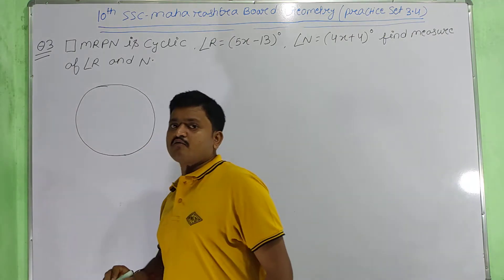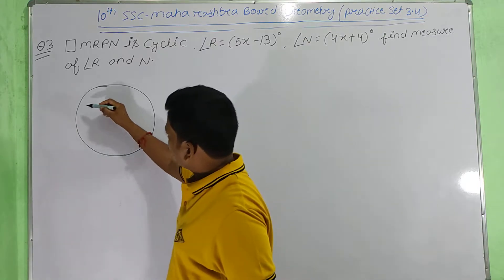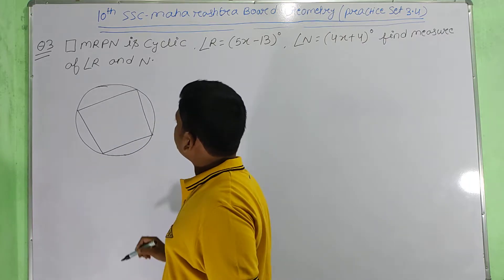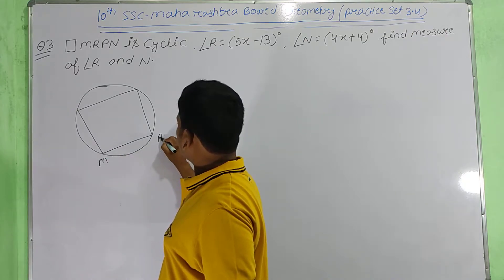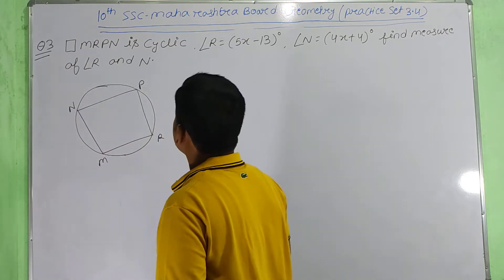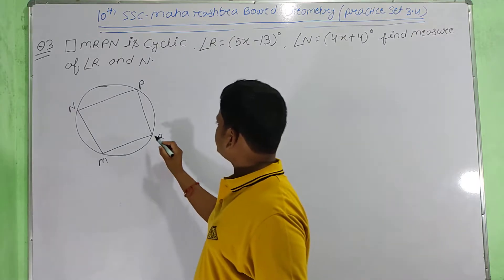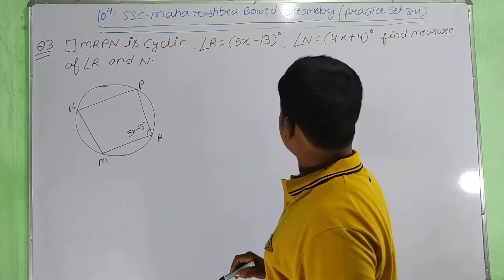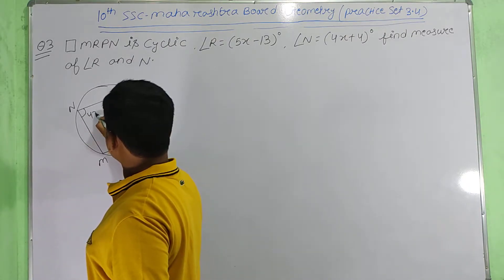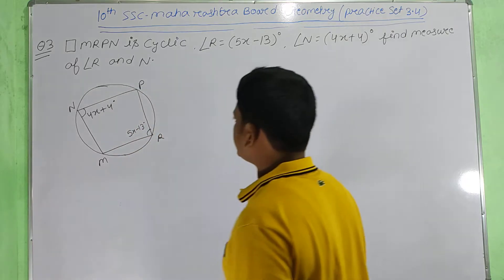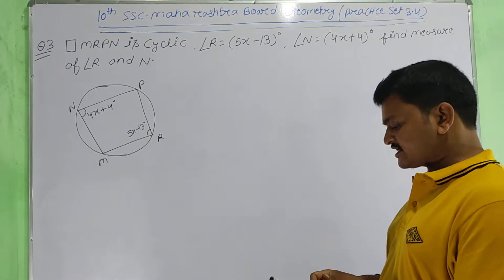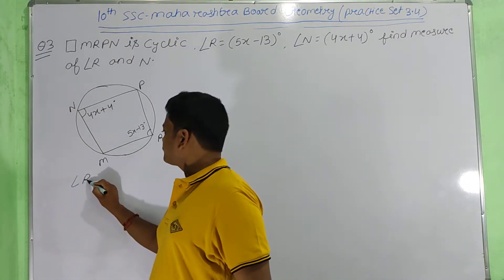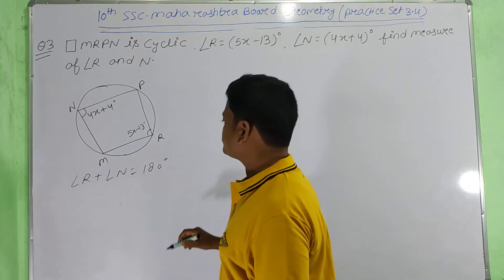A cyclic quadrilateral is a quadrilateral having all vertices on the circle. Here we have a cyclic quadrilateral MRPN where angle R is 5x minus 13 degrees and angle N is 4x plus 4 degrees. We know that in a cyclic quadrilateral, the sum of two opposite angles is supplementary, meaning angle R plus angle N equals 180 degrees.